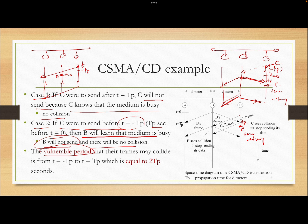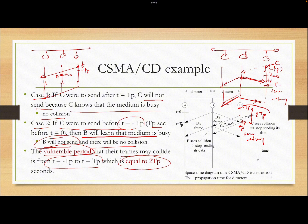The vulnerable period during which a frame may collide is from minus TP to TP, which equals only two TP. If TP is very small, this window is also very small. If stations send at any other time, they will not have a collision because they will learn that other people are already sending.